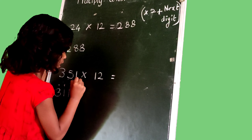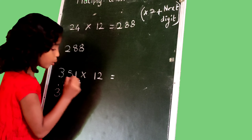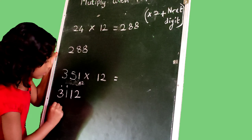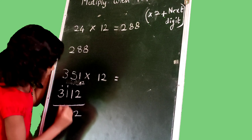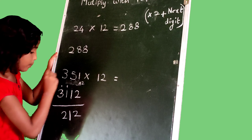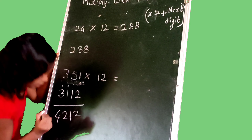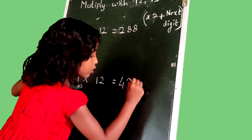Then 1, we multiply with 2: 1 times 2 is 2, we write 2. Then 2 as this, and 1 plus 1 is 2, plus 1 carry is 4. Friends, 351 multiply with 12, the answer is 4212.